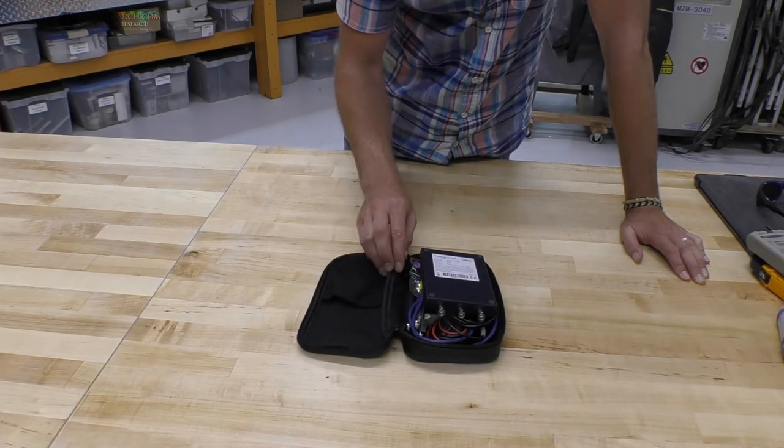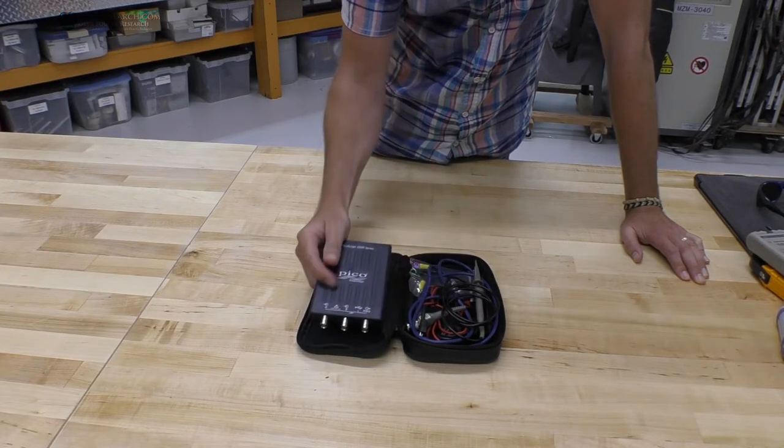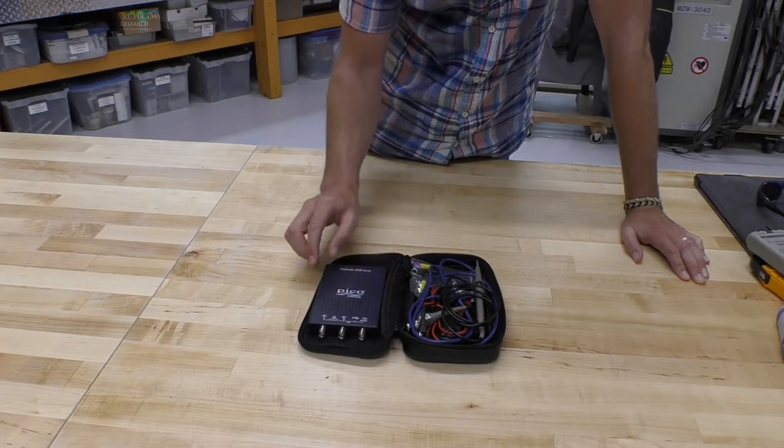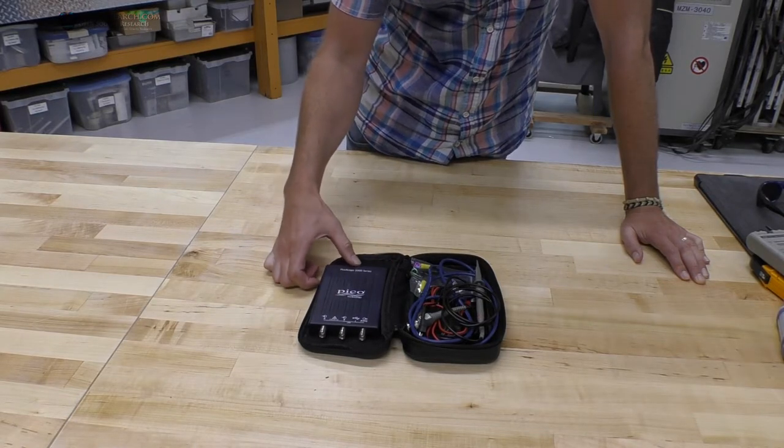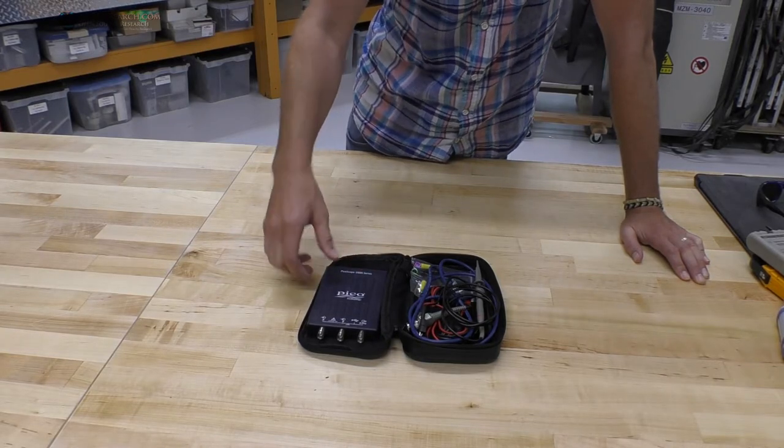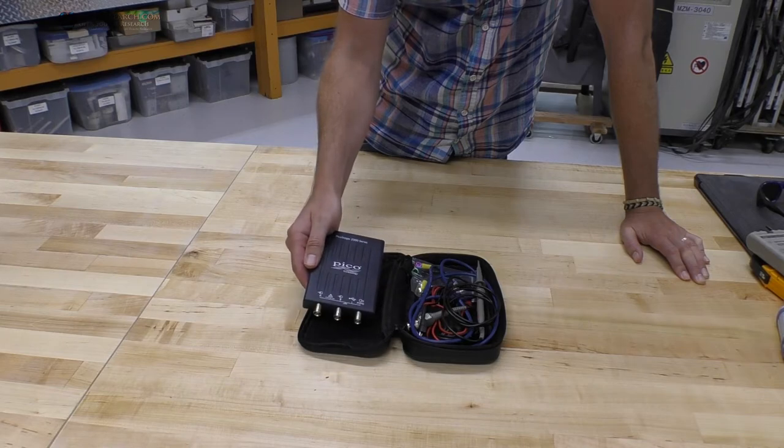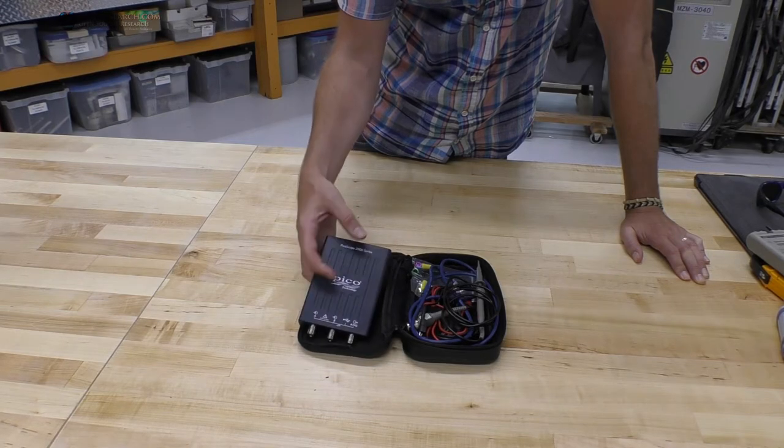But buying an oscilloscope can be difficult, especially a digital one. So what you've got is a very cost-effective solution here, which is the Pico Technology Scope. This is the Pico Scope 2000 series. This is the cheapest of the cheap. This is a hundred bucks. But what you've got is you can plug this into your PC via a USB cable.